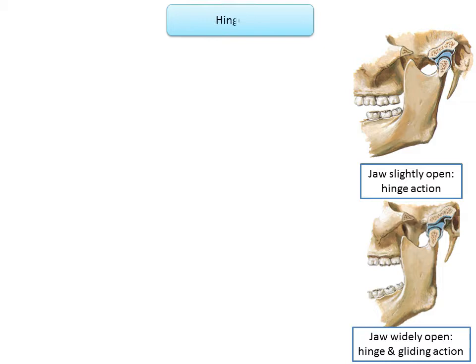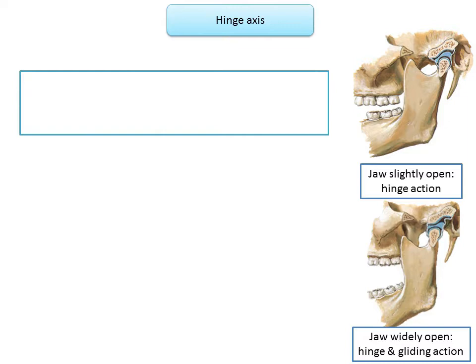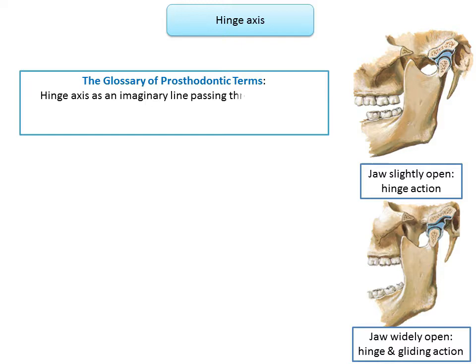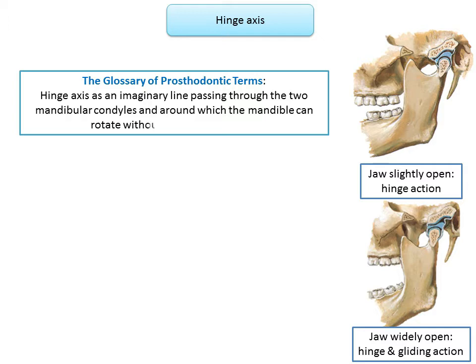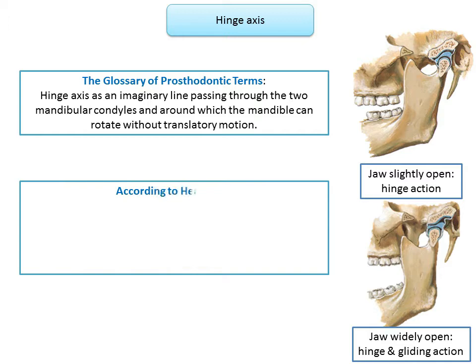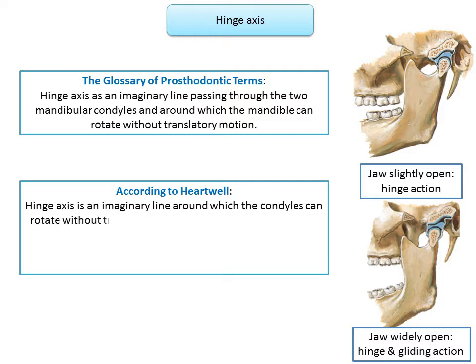This brings us to the second term: the hinge axis. The Glossary of Prosthodontic Terms defines hinge axis as an imaginary line passing through the two mandibular condyles around which the mandible can rotate without translatory motion. According to Hartwell, hinge axis is defined as an imaginary line around which the condyles can rotate without translation.